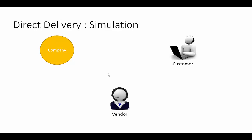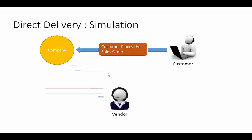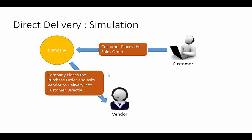A company receives an order from a customer to deliver bicycles next week. Once the order is taken, the sales manager looks at the available inventory and finds there is not enough inventory to deliver to the customer next week. The company places a purchase order to buy the required number of bicycles from a vendor. Since the vendor and customer are in the same town, the company asks the vendor to deliver the goods to the customer directly, minimizing delivery time and saving unnecessary freight costs.